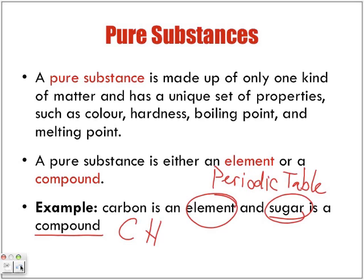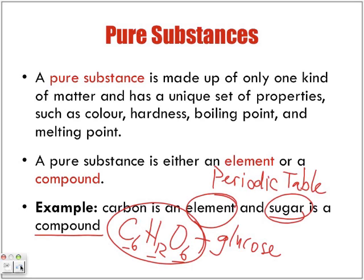Those three elements are carbon, hydrogen, and oxygen. C6H12O6 is an example of one type of sugar, which is glucose. It's made up of three elements, but put them all together and we form one compound.